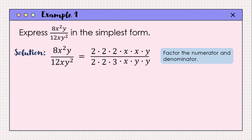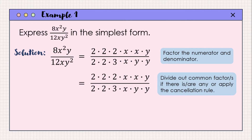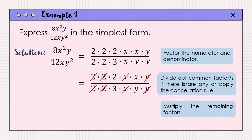Then we proceed with dividing out the common factors. The common factors we have are: 2, another 2, the variable x, and the variable y. After cancelling those, we multiply the remaining factors: 2 multiplied by x equals 2x, and 3 multiplied by y equals 3y. So the simplest form of 8x squared y all over 12xy squared is equal to 2x over 3y.